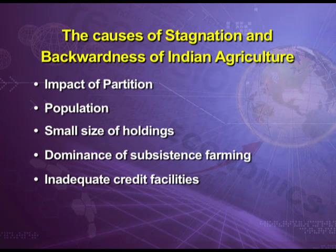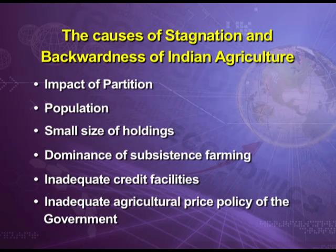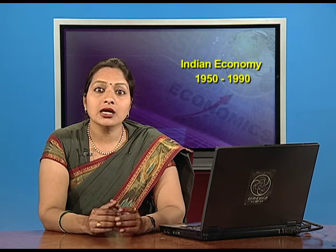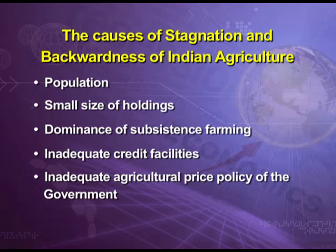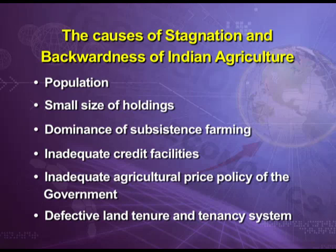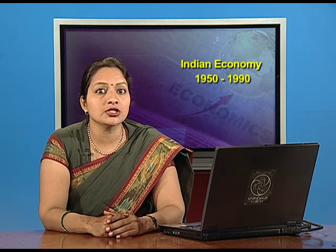The fifth cause is inadequate credit facilities — credit is not available to farmers at fair rates of interest. Sixth is the inadequate agricultural price policy of the government, which guarantees a minimum support price or procurement price that farmers argue is not remunerative. The seventh and last cause is the defective land tenure and tenancy system — zamindars owned the land but farmers tilled it, and profits went to the zamindar as rent regardless of the farmer's economic condition. Some reforms were therefore taken to improve the agricultural sector.